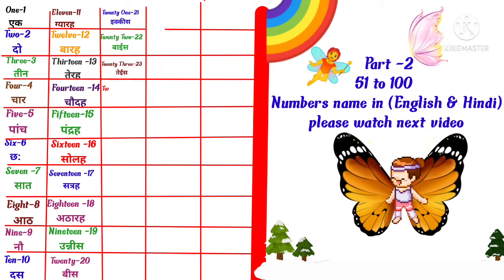T-W-E-N-T-Y F-O-U-R, 24 means twenty-four. T-W-E-N-T-Y F-I-V-E, 25 means twenty-five.